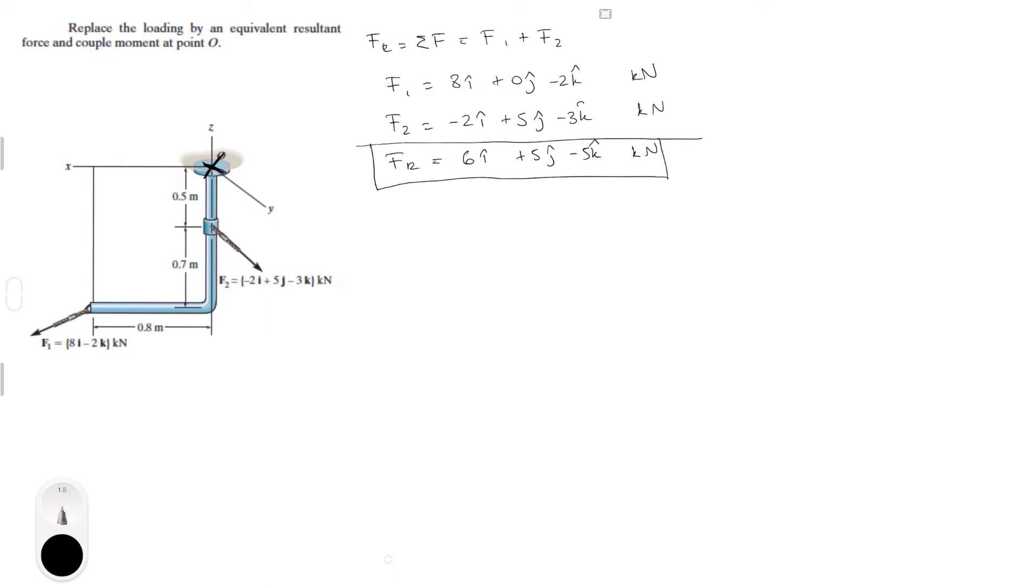Cool, we have half the problem then. So the other half, which is the moments around point O. Now the moments around point O are calculated by doing the cross product of R1 cross F1 plus R2 cross F2. What is R1 and R2?